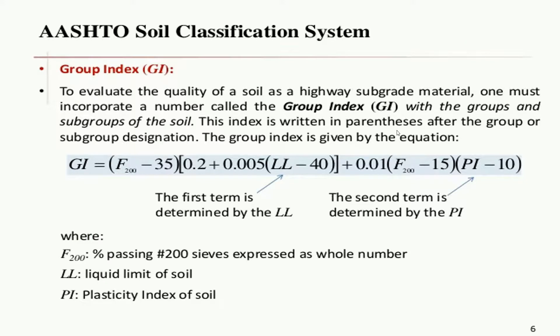Here is the formula to calculate the Group Index. The Group Index (GI) is one of the important factors to evaluate the quality of soil as a subgrade material. One must incorporate a number called the Group Index GI with the group and subgroups of the soil. The Group Index is given by the equation: GI = (F200 − 35) × [0.2 + 0.005(LL − 40)] + 0.01(F200 − 15)(PI − 10), where F200 is the percentage passing the No. 200 sieve, LL is the liquid limit, and PI is the plasticity index.